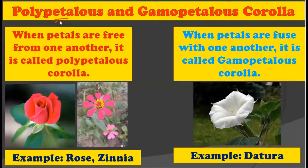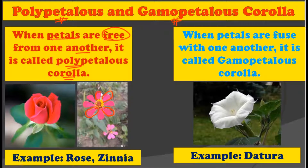Now let us see the polypetalous corolla and the gamopetalous corolla. When the petals are free from one another, such a corolla is called a polypetalous corolla. You can observe in the picture that all the petals are free and not fused with each other — that is why it is called polypetalous. The example for polypetalous corolla is rose and Zinnia, where petals are free from each other.